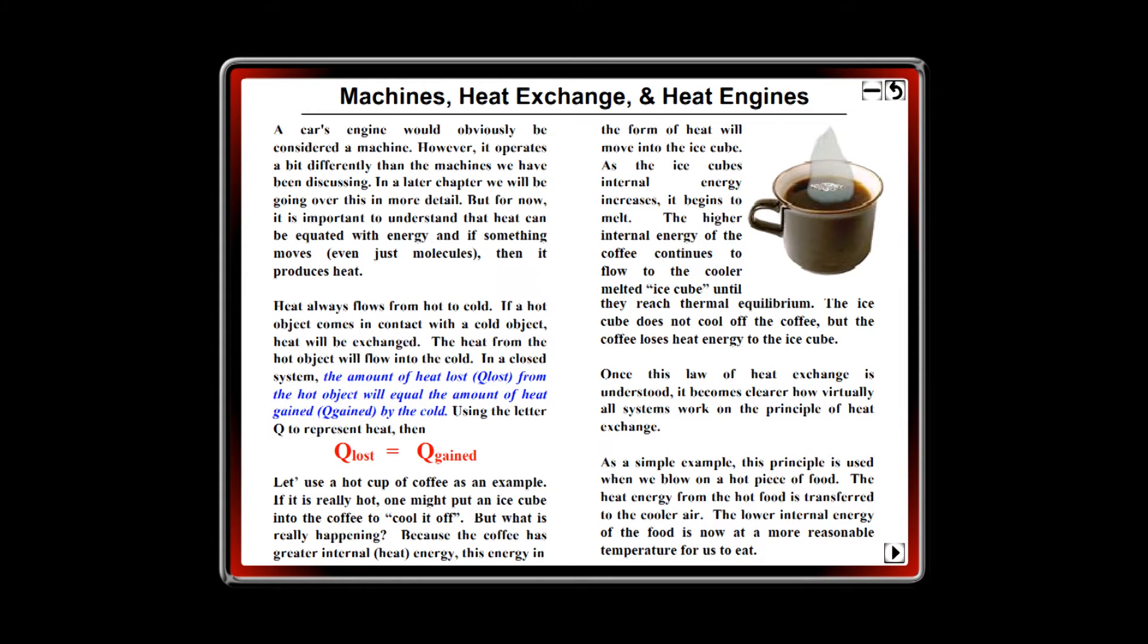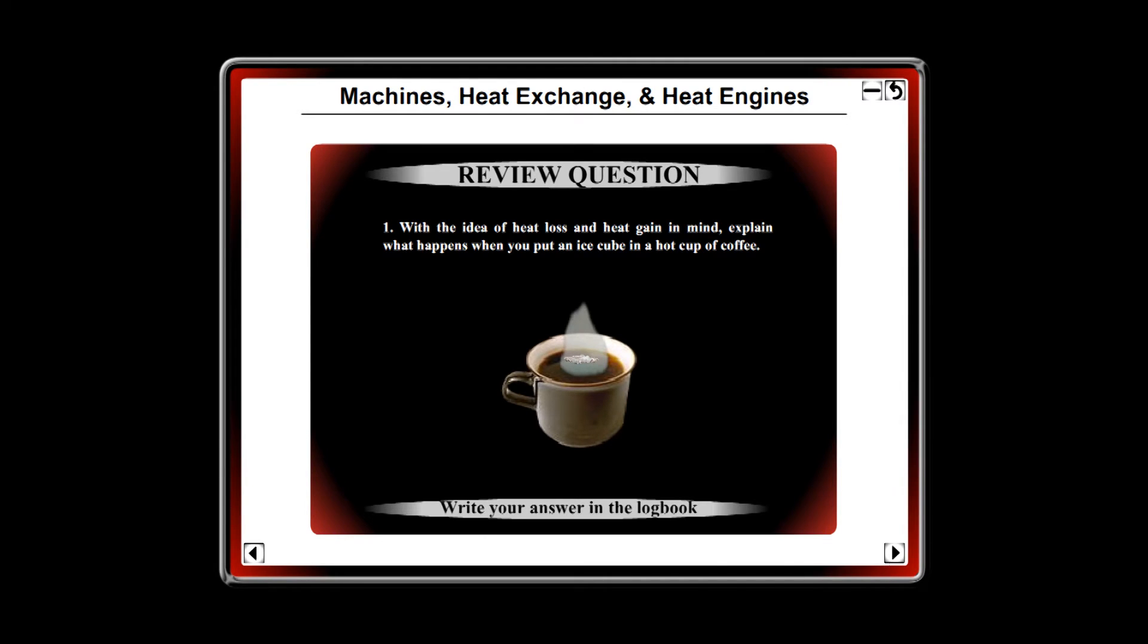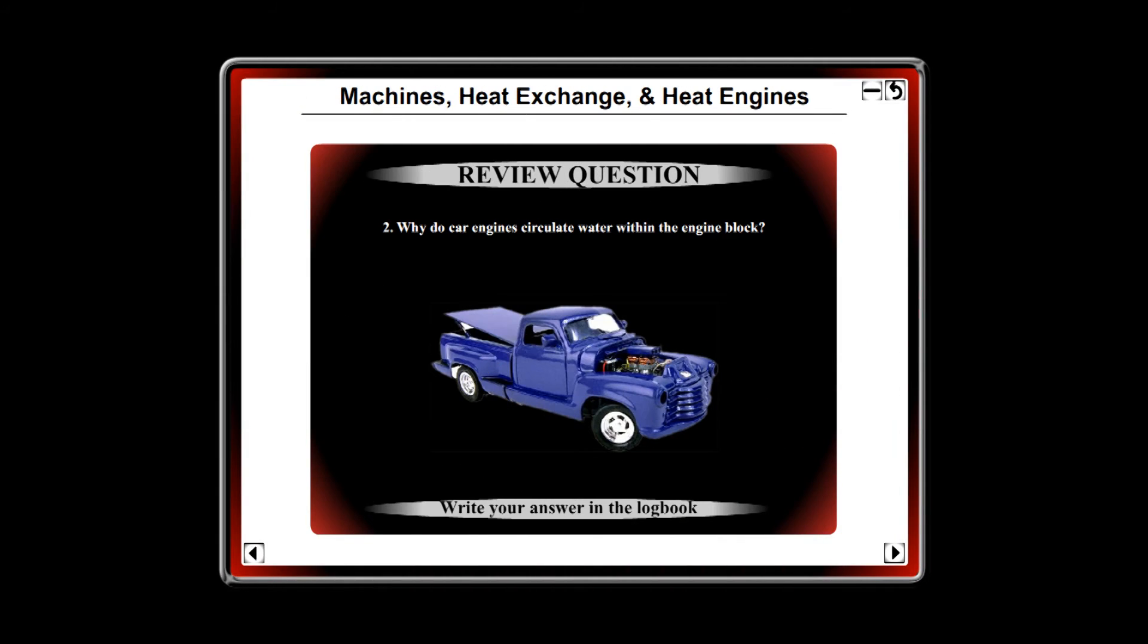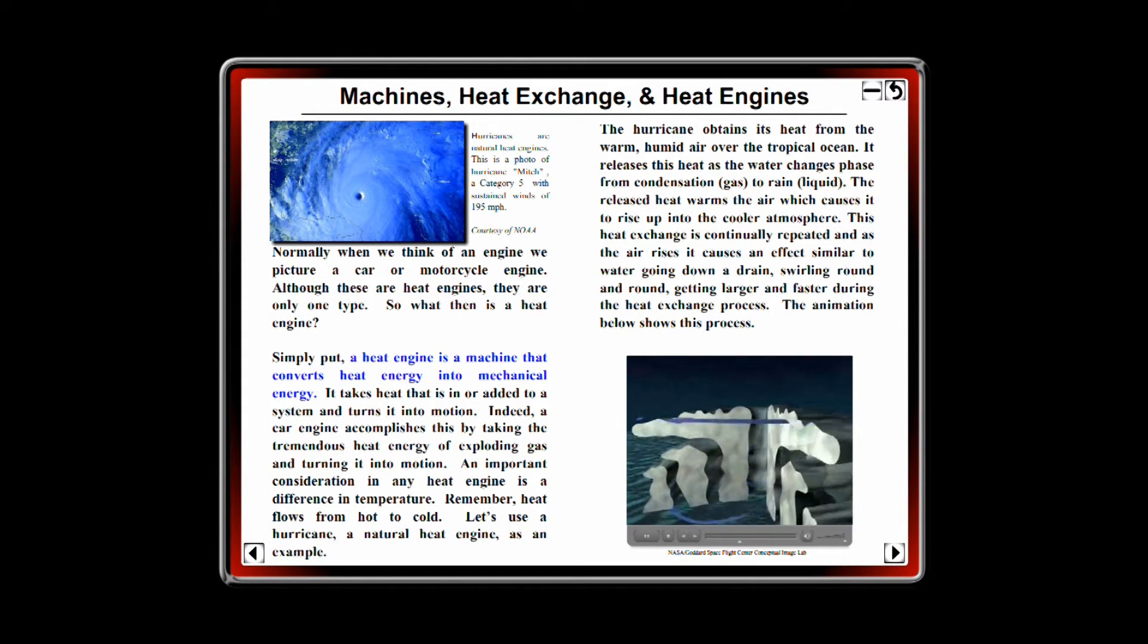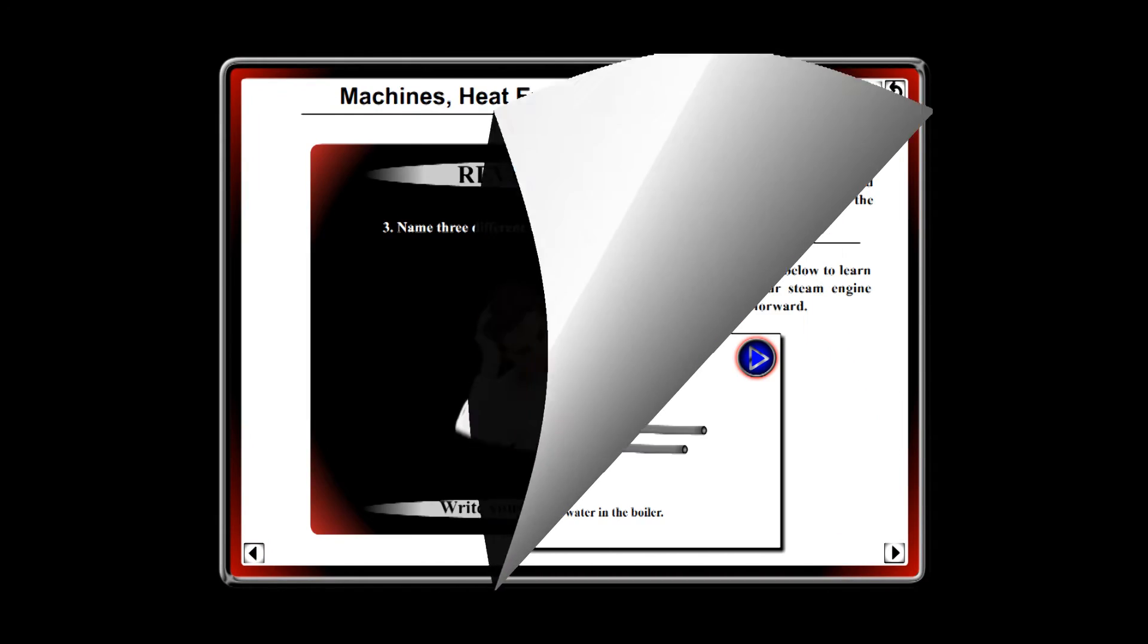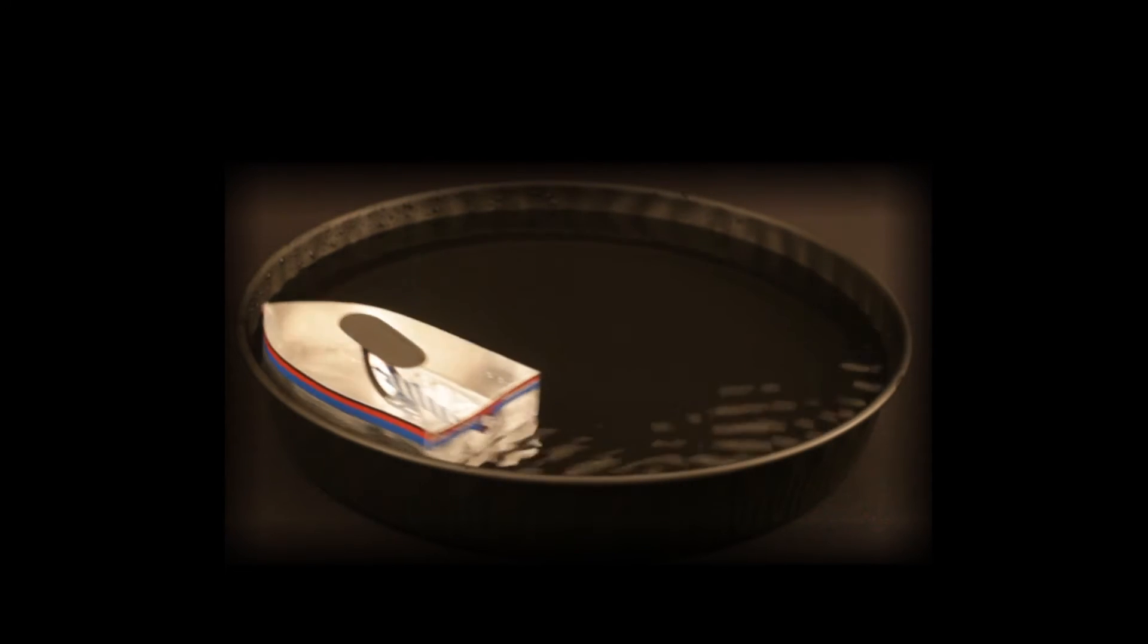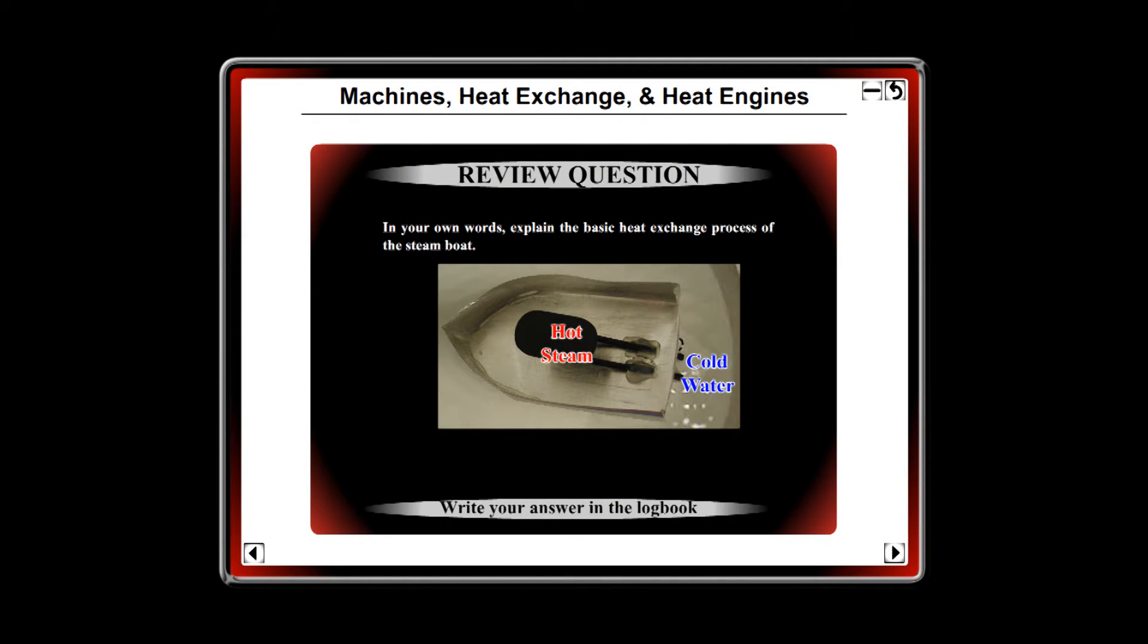On the first page, the student will learn that heat always flows from hot to cold. Students will answer questions. Next, they will learn about the internal combustion engine and how it uses this heat flow and difference in temperature to function. Another question, and then they are introduced to natural heat engines, which a hurricane is. The warm ocean and cool atmosphere are the difference in temperature. As the column of air rises, it creates a vortex. Last, it ties it all back into one of their projects. In this case, the steamboat, explaining how it is able to run by utilizing the difference in temperature between the hot boiler and the cold water.